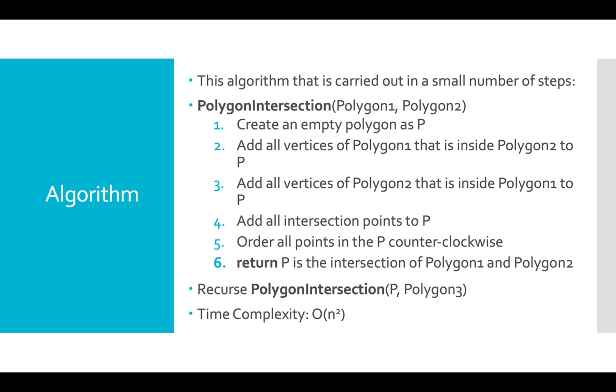We continue to recurse this function. However, instead of taking two polygons, polygon 1 and polygon 2, we take in the P and polygon 3, which is P is the intersection of polygon 1 and polygon 2, and polygon 3 is the next polygon. So the next function will calculate the intersection of the previous intersection and polygon 3. We keep doing this for all the polygons in the array. The time complexity is O(n²).